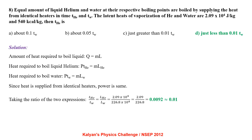Equal amounts of liquid helium and water at their respective boiling points are boiled by supplying heat from identical heaters in time T-helium and T-water. The latent heats of vaporization of helium and water are 2.09×10⁴ J/kg and 540 kcal/kg. Since heat is supplied from identical heaters, power is same. Taking the ratio: T-helium/T-water equals L-helium/L-water, which comes out to be approximately 0.01.